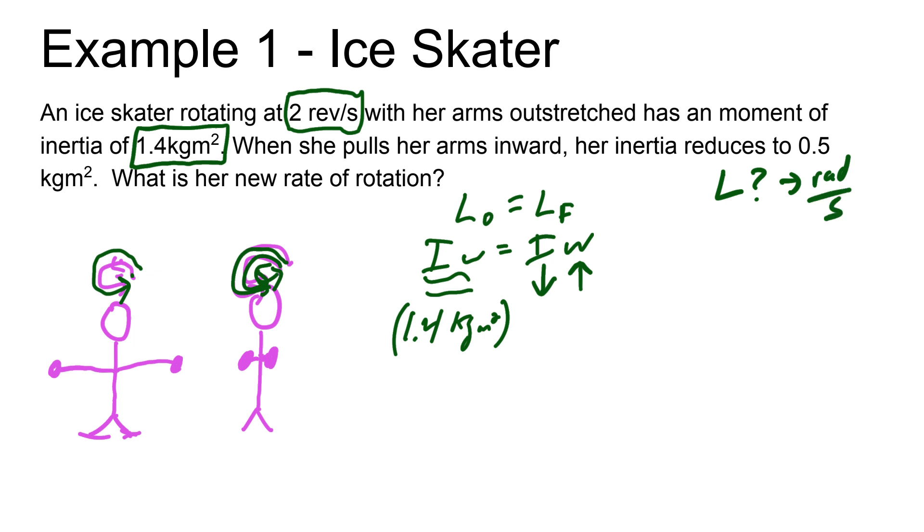If they just ask what is the angular momentum, you have to change it to radians per second. Since we're asking for the rate of rotation, unless they specify radians per second, you can just leave everything in revolutions per second. It makes things easier. Watch what happens with the units when we do this.